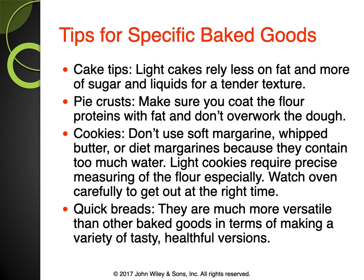Quick tips for different baked goods: for cakes, light cakes rely less on fat and more on sugar and liquids for tender texture. For pie crust, coat flour proteins with fat and don't overwork the dough. For cookies, don't use soft margarine, butter substitutes, or diet margarines because they contain too much water. Light cookies require precise measuring of flour. Quick breads are the most versatile baked goods for making healthy versions.